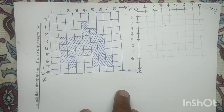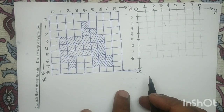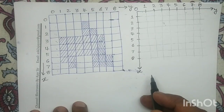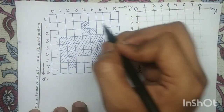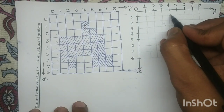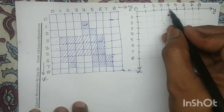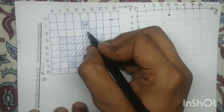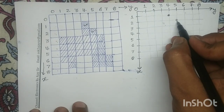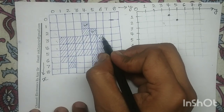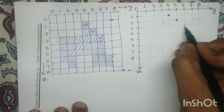Since chain code is the representation of a boundary of an object, from this given object we have to select the boundary pixels and our starting point is 1,4. So this pixel has the coordinate 1,4. Let me mark 1,4 in this plane — along x it is 1, along y it is 4. The next boundary pixel has the coordinate 2,5, so 2,5 is this pixel. The next boundary pixel has the coordinate 3,6, so 3,6 is this pixel.